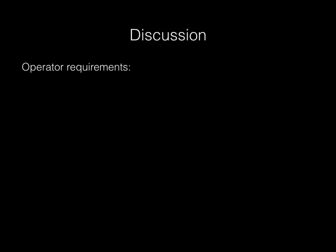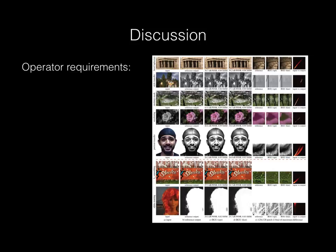I showed an operator where our technique works really well, one where it does okay, and one where it doesn't work at all. This leads to the question: what kinds of operators does it work on? We evaluated our technique on a variety of operators and found that the two most important properties are: one, it should be scale invariant—in other words, it should ideally commute with downsampling.